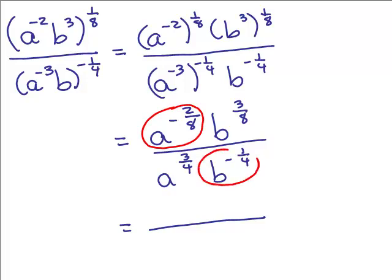Anything that has a negative exponent, it switches from numerator to denominator, or vice versa. So if I write that in the denominator, it would be a plus 2 eighths. I'm just going to write that as a to the positive 1 fourth. And I also have a to the 3 fourths. I've taken care of the two a's.